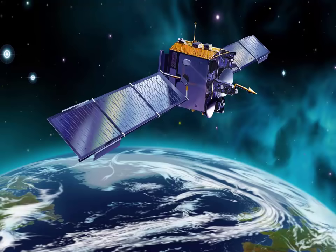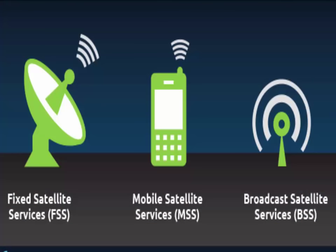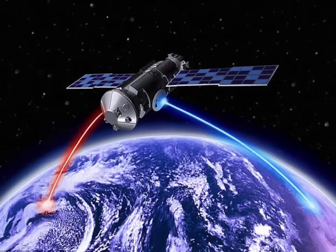What are the parts of a satellite? Satellites come in many shapes and sizes, but most have at least two parts in common: an antenna and a power source. The antenna sends and receives information, often to and from Earth. The power source can be a solar panel or battery — solar panels make power by turning sunlight into electricity.